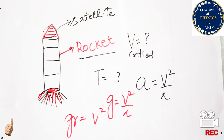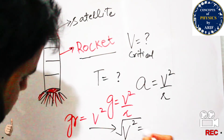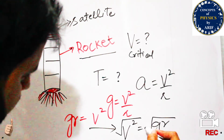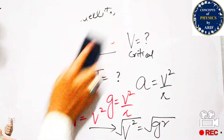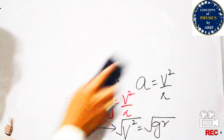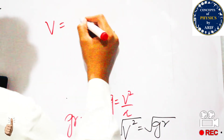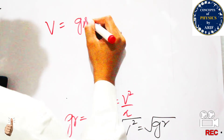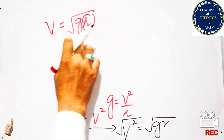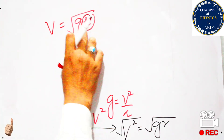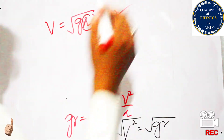Rearranging, we get g·r = v². Taking the square root of both sides gives v = √(g·r). This is the final expression for critical velocity, where r is the radius of the earth.